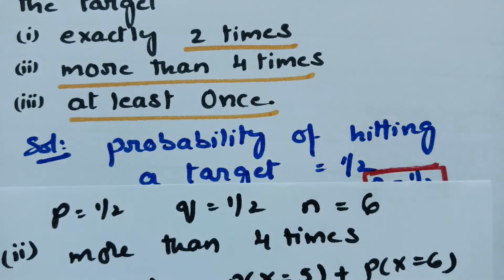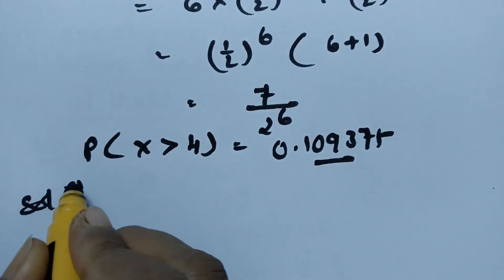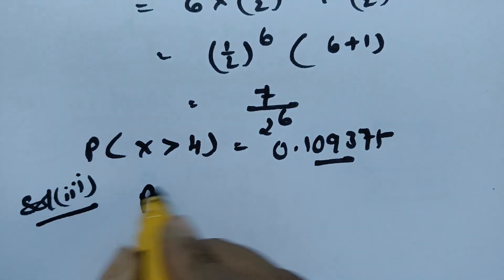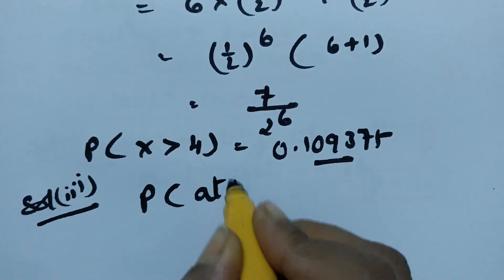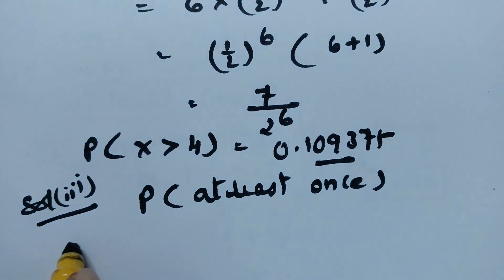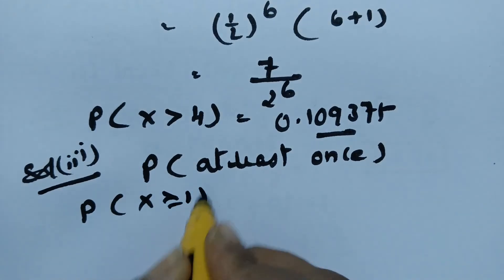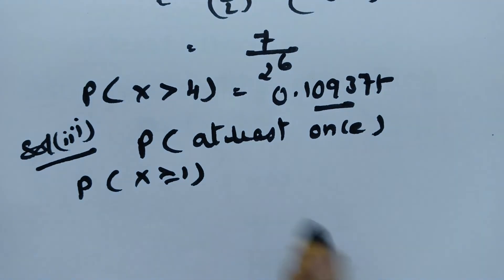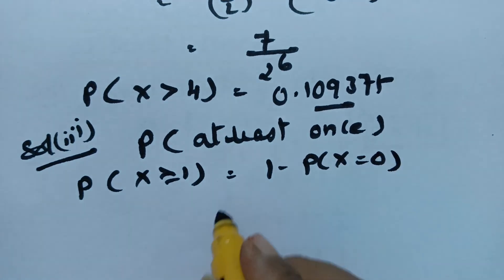Next is Solution 3: the probability of hitting the target at least once. At least once means X is greater than or equal to 1, which equals a minimum of 1. This can be written as 1 minus the probability of X equals 0.